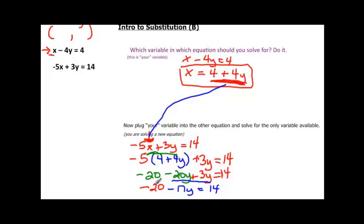And now we add 20 to both sides, so we can take this to the other side. And we have, I'm going to write it over here. Negative 17y on that side is equal to, you're adding 20 to both sides, we're going to have 34. And dividing by negative 17, y is going to be equal to negative 2.